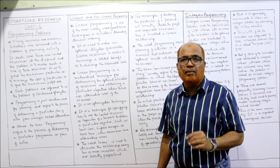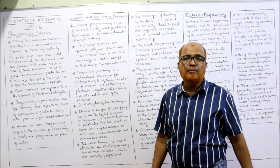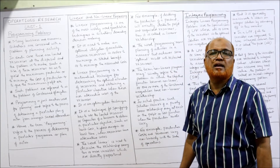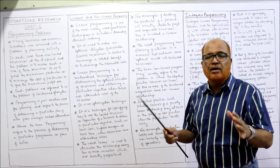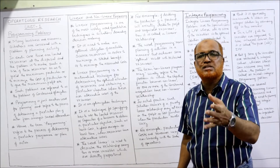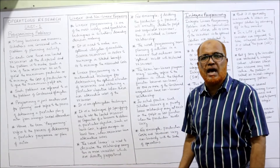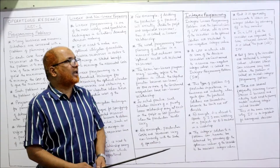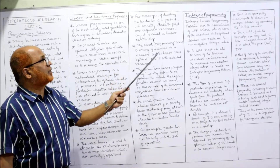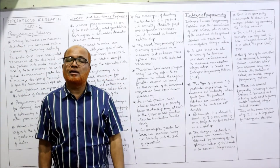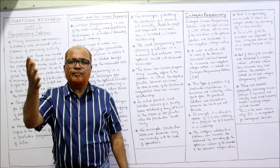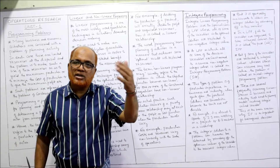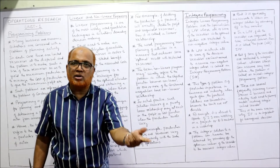If we triple the production, the material will be tripled. If there is a direct relationship, we call it a linear relationship. In any problem where variables have a directly proportional relationship, we call it linear programming. For example, if doubling the production of a product exactly doubles the profit and required resources, then it is called a linear relationship.